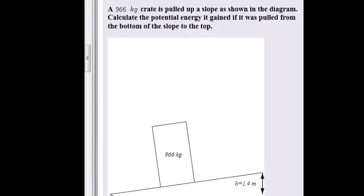So assuming that it started here at the bottom and it's going to be pulled up all the way to the top, and the sketch indicates to us that the height is 1.4 meters. So the height from the bottom of the slope to the top is 1.4 meters.